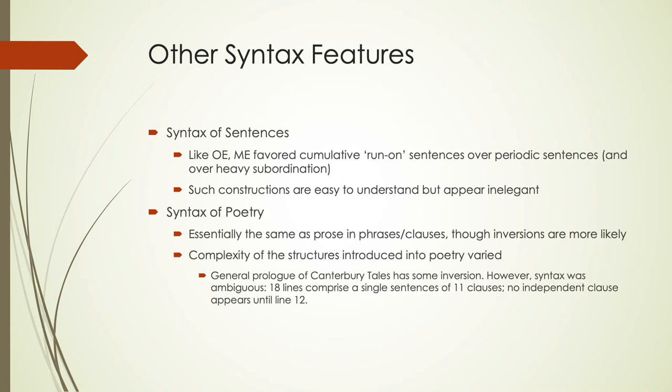In poetry, we're starting to see some changes where generally the same ordering appears as in regular Middle English phrases, though we see some inversions where things are switched around. The complexity of structures in poetry will vary. In the General Prologue of Canterbury Tales, there is some inversion, and syntax was relatively complex — the 18 lines comprise a single sentence of 11 clauses, and we don't actually see an independent clause until line 12.